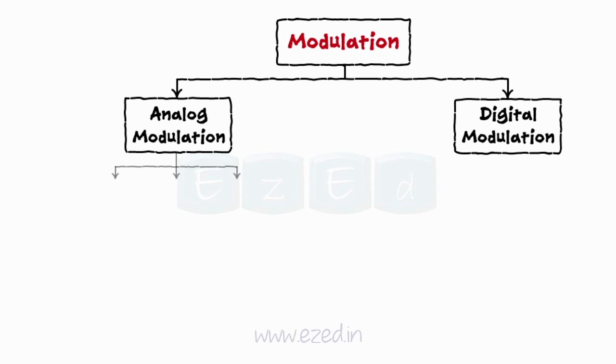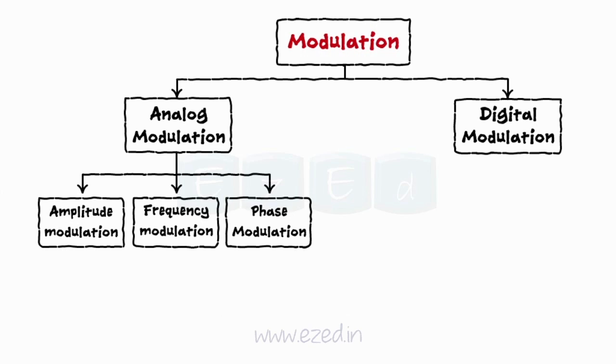Analog modulation is further divided into amplitude modulation, frequency modulation, and phase modulation.